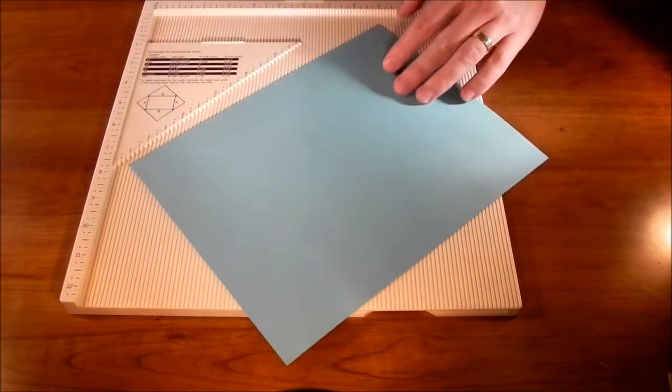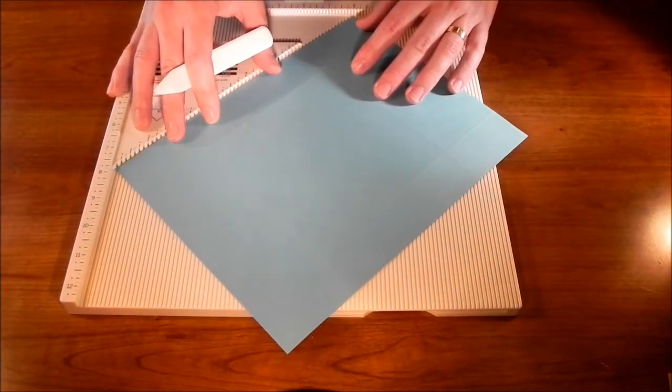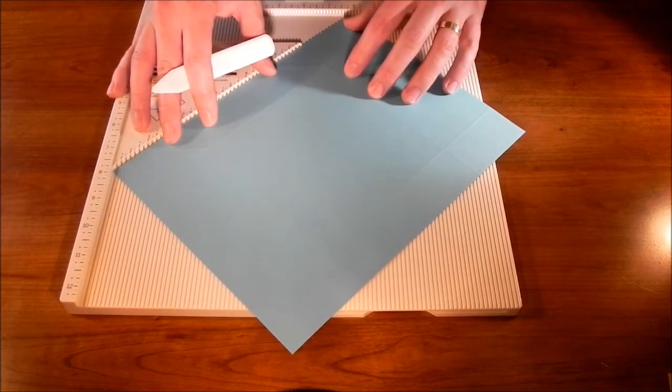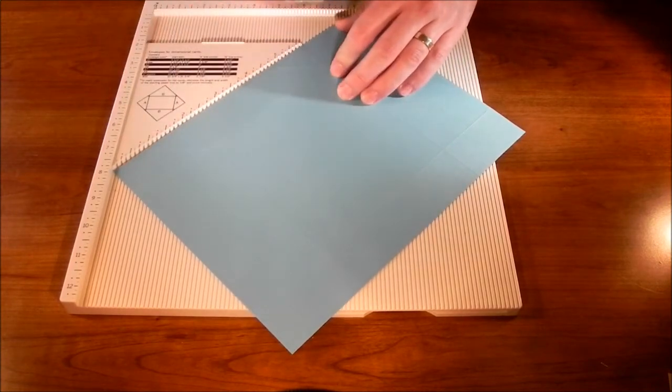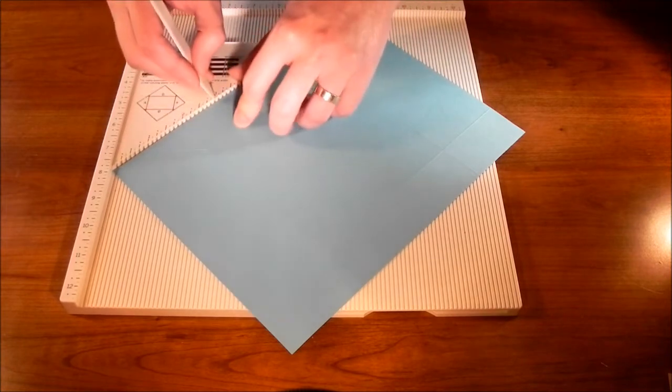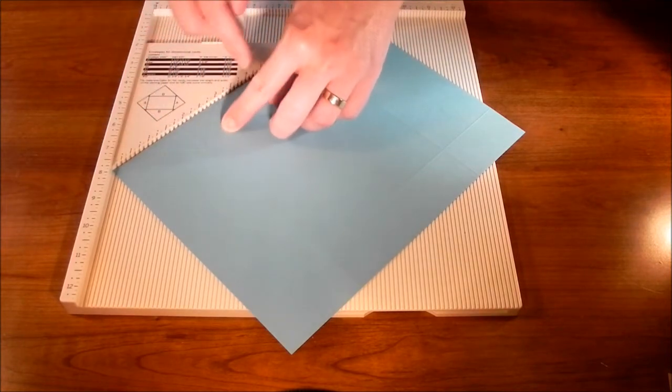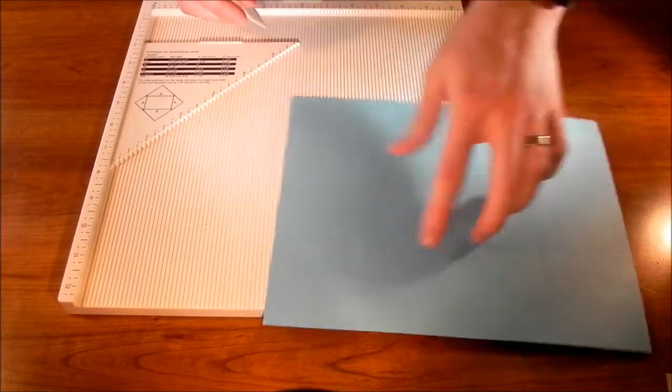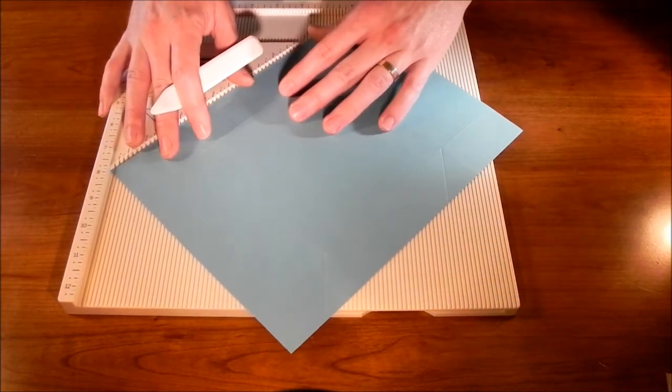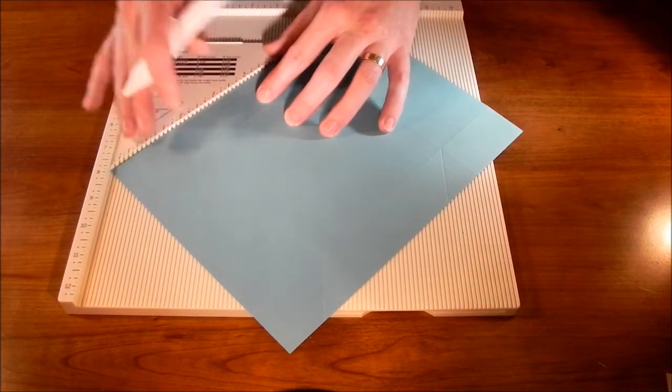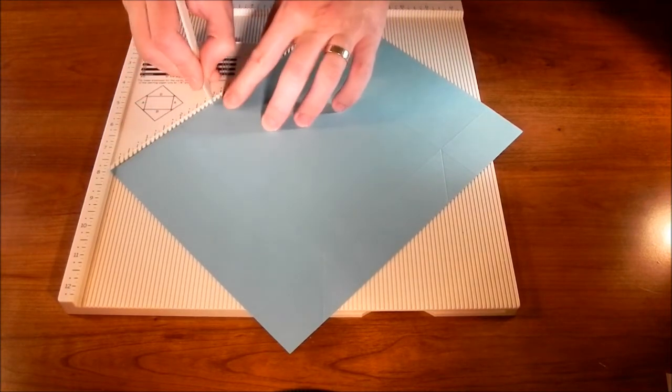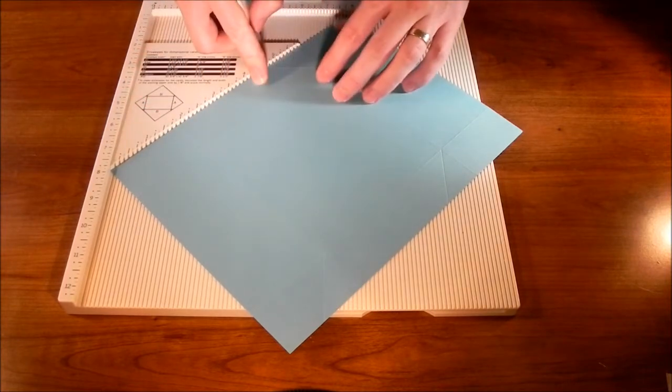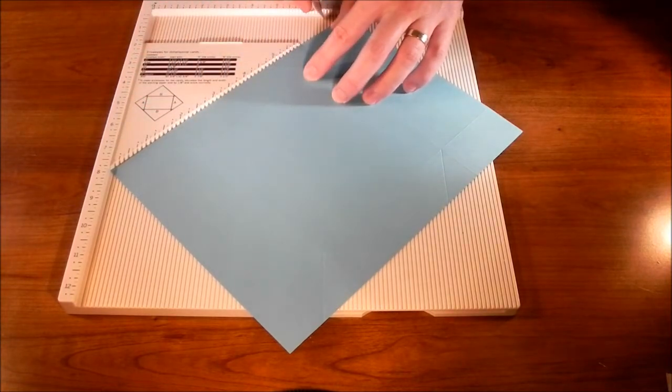Now let's flip the paper over, we'll do the same thing again. Okay, so we'll start here, 3 inches, here 6 and 7/8, turn it, and this will take care of the last set of lines, so 3 inches, and 6 and 7/8.